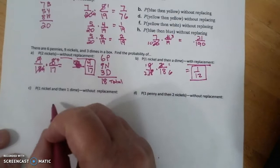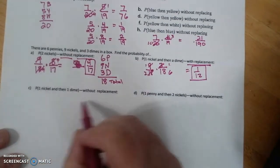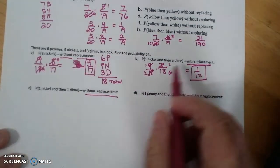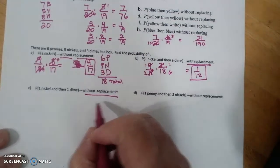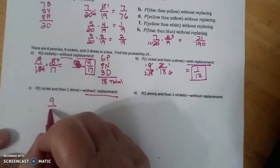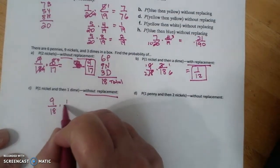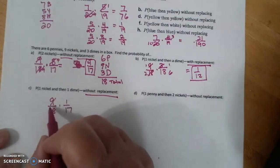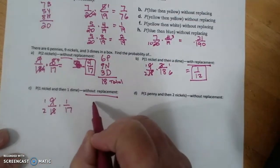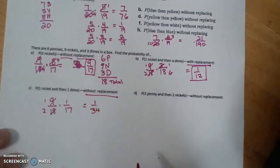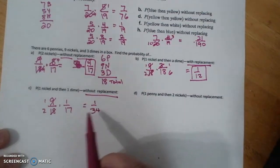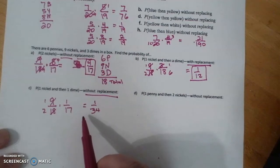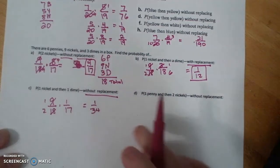Last two problems. Nickel then a dime without replacement, which means my sample space is going to shrink. 9 over 18 times 3 over 17. That's 1/2, which is 3/34. There's a way less chance I'm going to do that without replacement.